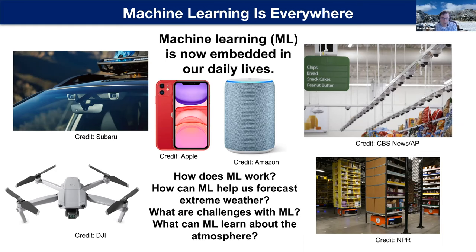Behind the scenes, machine learning plays a huge role in our modern economy. A lot of companies use machine learning to predict when certain goods are needed. Whenever you make an order on Amazon, robots work in the distribution center and bring shelves to employees to pick items and box them up. These are just a few examples of the myriad uses of machine learning. Tonight I want to focus on how machine learning works, how it can help us forecast extreme weather with examples on hailstorms and hurricanes, and what are some of the challenges associated with machine learning.